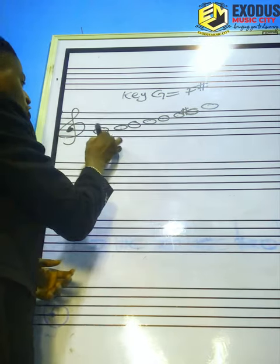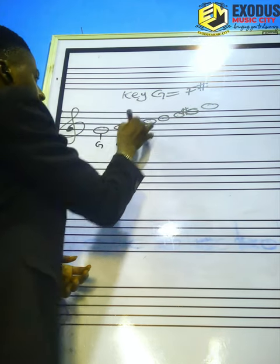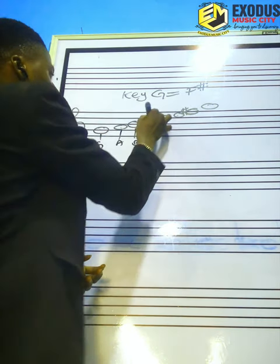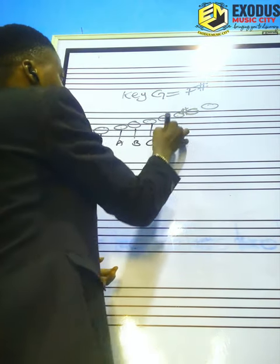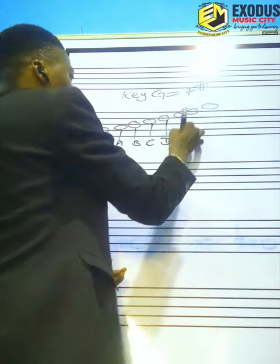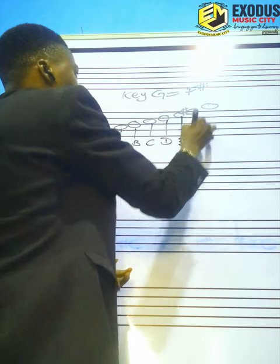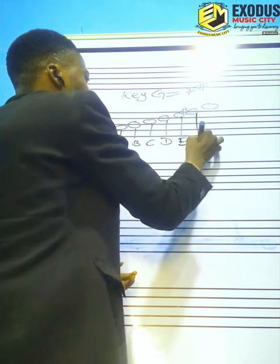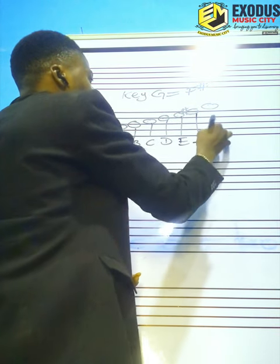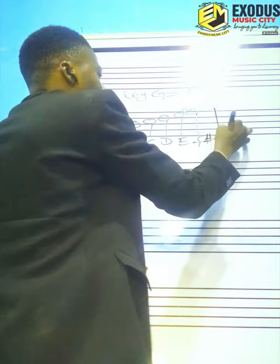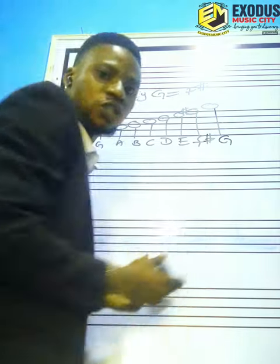Let's write it out: G, A, B, C, D, E, then F sharp, and G.